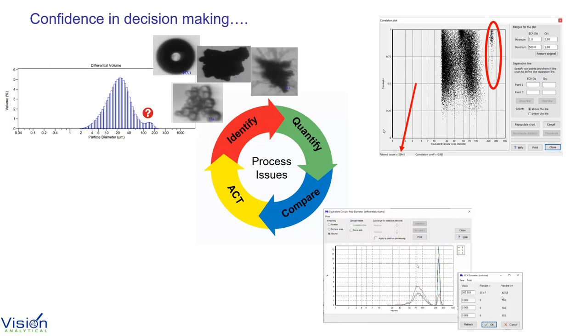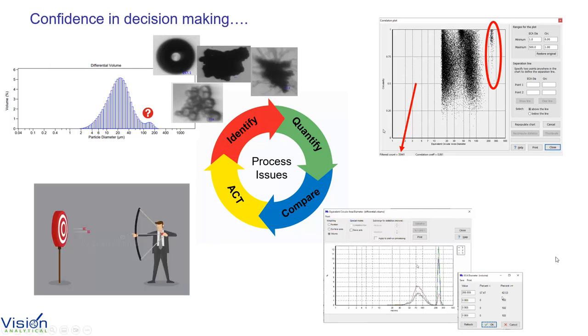So, in conclusion, by having more information, your action plan becomes more accurate and effective. This proves that dynamic image analysis is a highly useful tool for particle identification that can save users time and money.